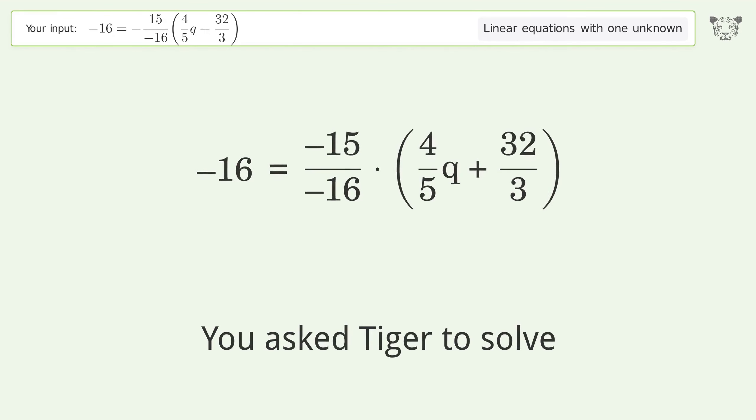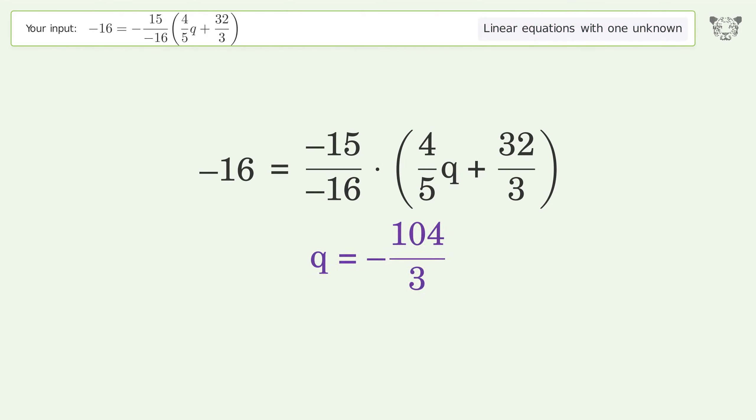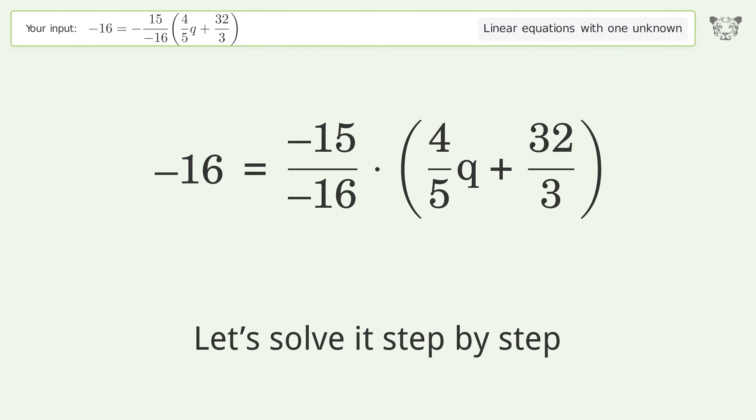You asked Tiger to solve this. This deals with linear equations with one unknown. The final result is q equals negative 104 over 3. Let's solve it step by step.